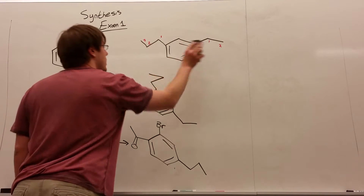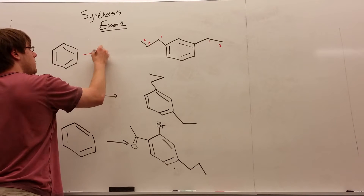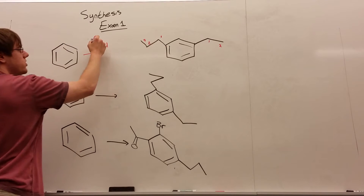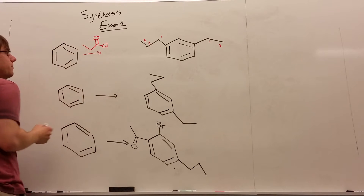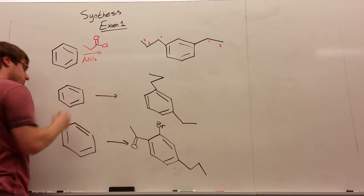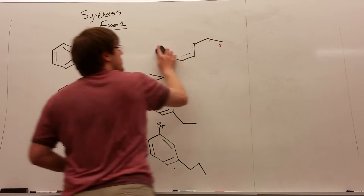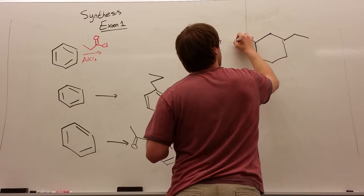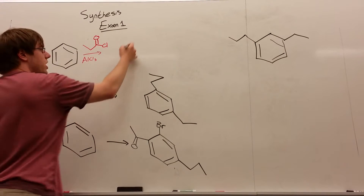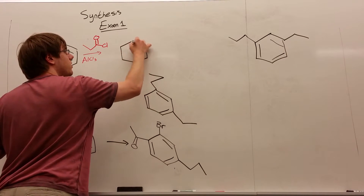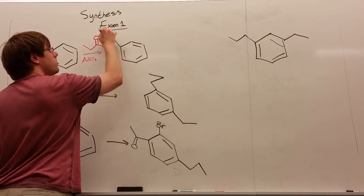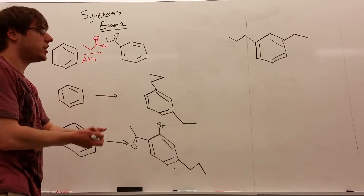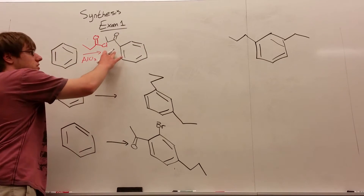It doesn't matter which one you add first. Let's say I add the one on the right first. That first step is the acylation: double bond O, chlorine, and I need to add however many carbons — one, two, three — so this is carbon one with the double bond O, two, and three. Under the arrow goes AlCl3. After that first step, I'd be left with a benzene ring with three carbons and a double bond O on the terminal carbon.